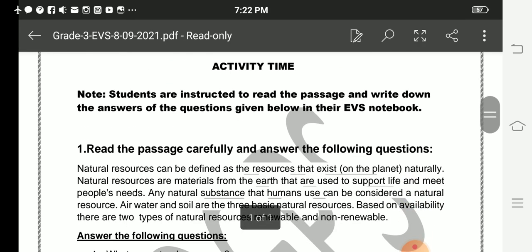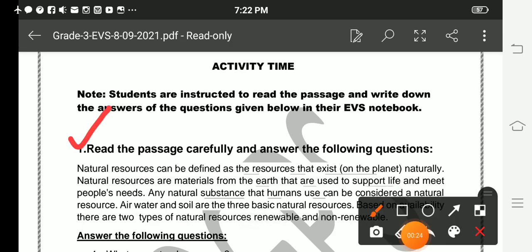Read the passage carefully and answer the following questions. Natural resources can be defined as the resources that exist on the planet naturally. Natural resources are materials from the earth that are used to support life and meet people's needs.